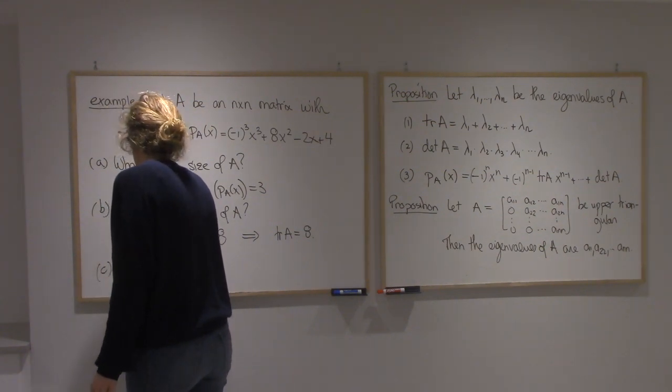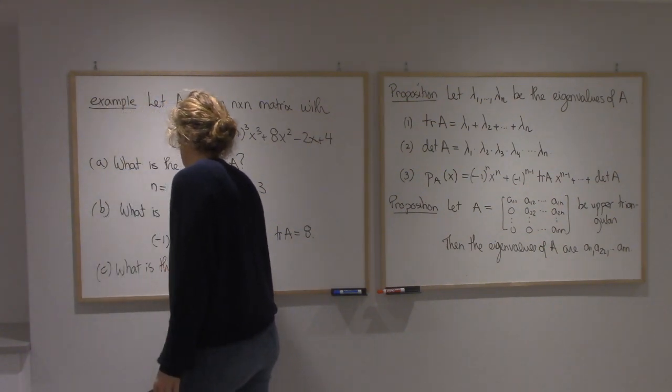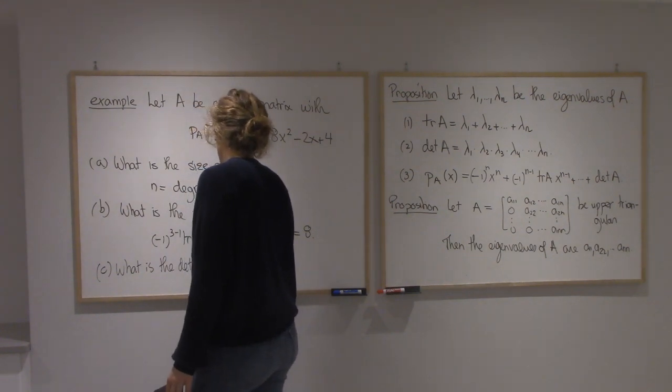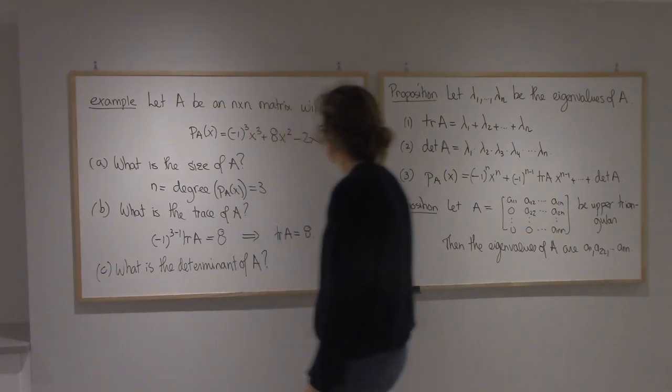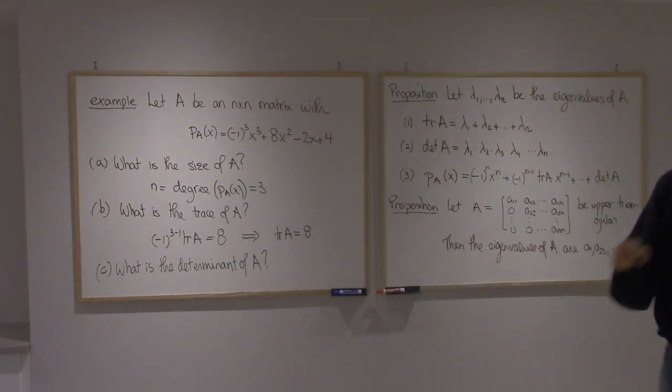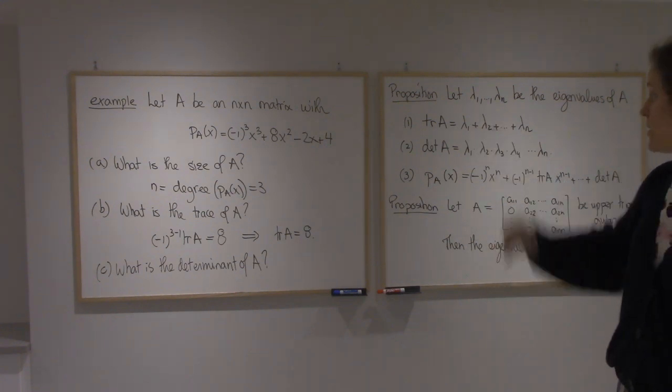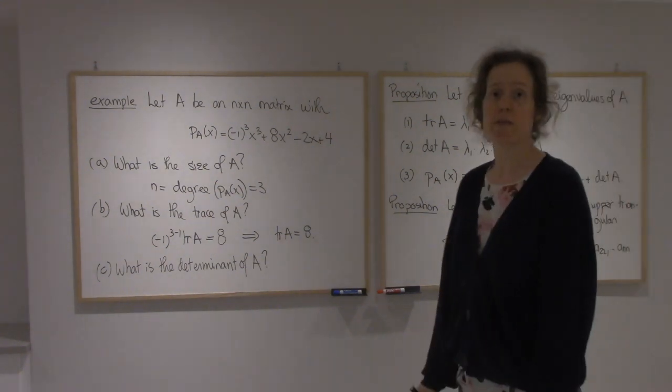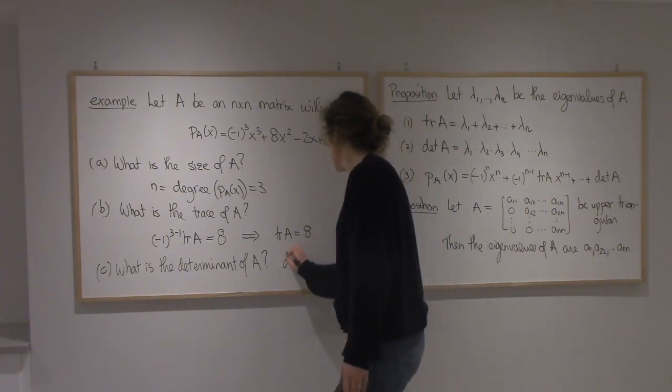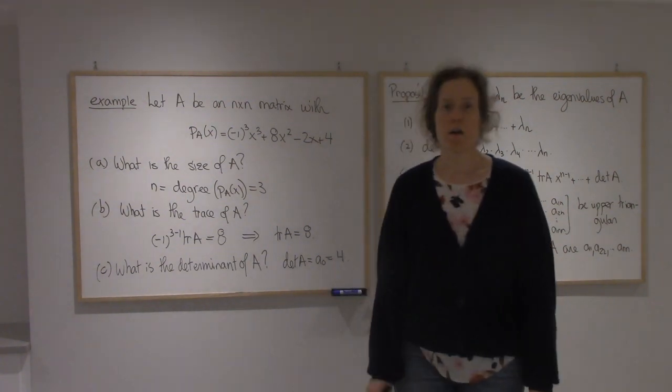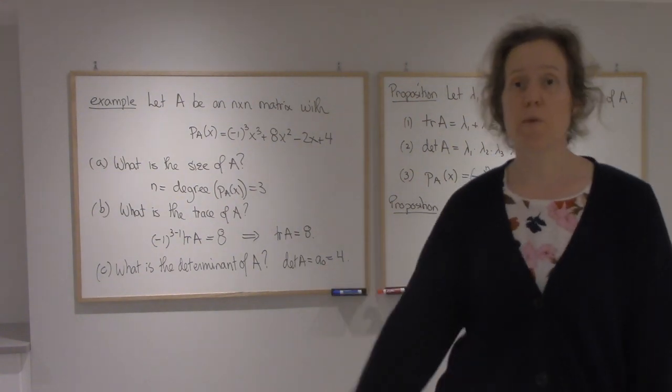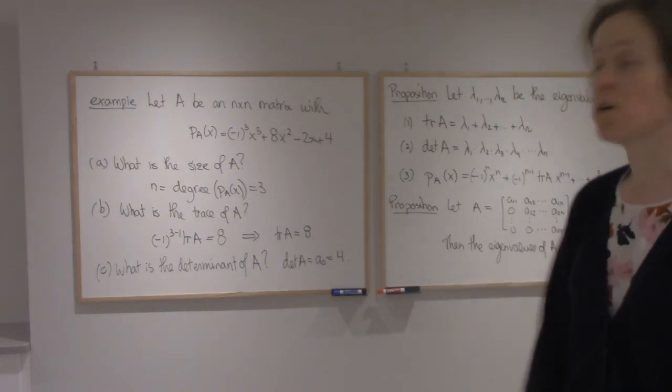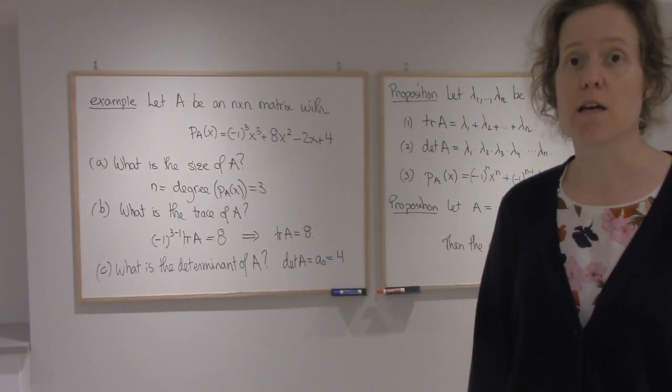What's the determinant? We're told the determinant is the constant term, so that's pretty straightforward. The determinant of A is 4. Final question: Is A invertible? We have its determinant, and we know it's invertible because the determinant is not zero.